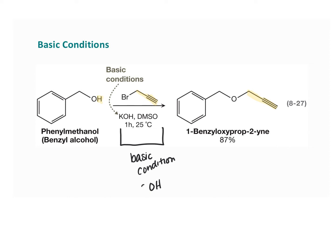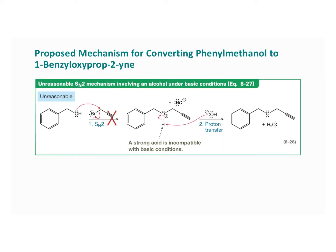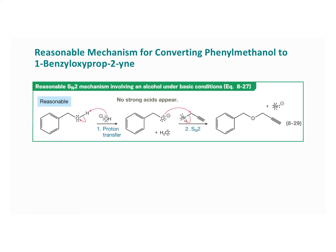OH- is the mark of a strong base, so we know going in that this is under basic conditions. In one proposed mechanism, the OH- ion attacks and the bromine leaves — an SN2 reaction. However, this doesn't work. It is unreasonable because the product of the first step gives us a really strongly acidic proton — that's a protonated alcohol — and that's incompatible with basic conditions.